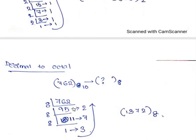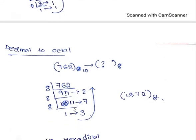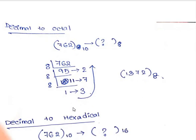Now, how can I convert a decimal number to its equivalent octal number? In the case of decimal to any conversion, I have to divide the number by the base I want to convert to. For decimal to binary, I divided by 2. For decimal to octal, I will divide by 8. Whatever the remainder is, I will keep it and write it in bottom-to-top order, and that will be your octal number. I have to do the same thing I did before, only here I divide by 8, as the base of octal is 8.